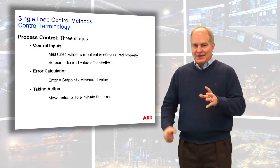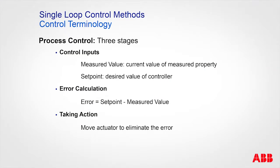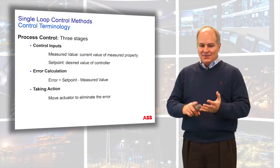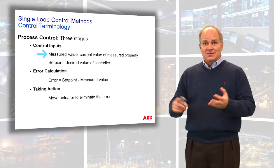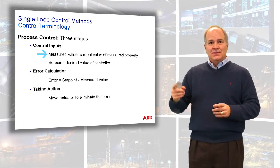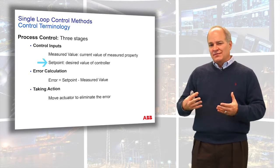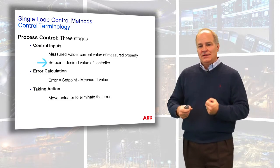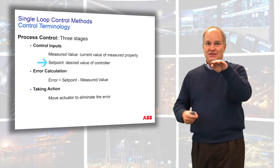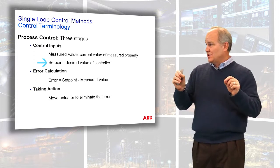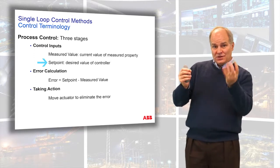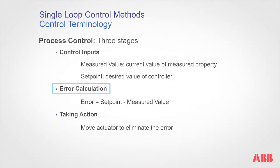There are really three things you have to think about when dealing with a controller. We have the inputs to the controller, which are the measured value or the process variable — sometimes called MV or PV, or sometimes 'y'. We also have a set point, which is a reference or desired input — where you as an operator want the process to be. The controller calculates the difference between what you want and where you are, producing what's called an error.